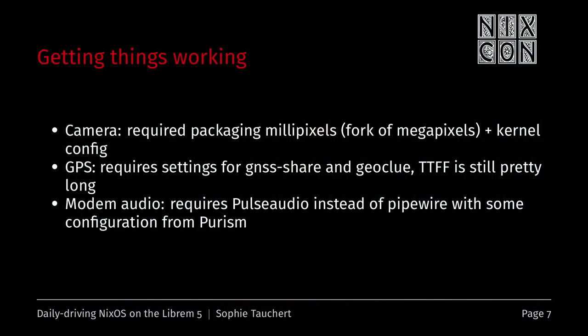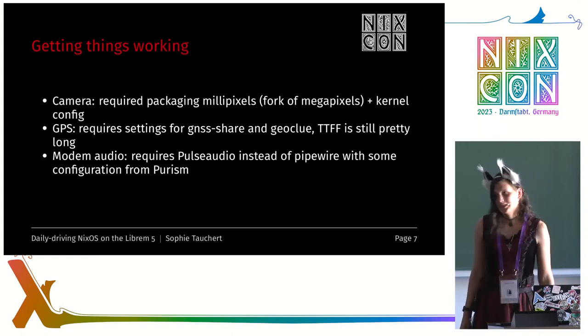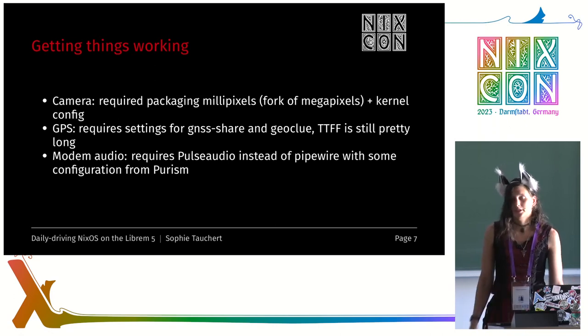So, getting things working. The camera required packaging a fork of Megapixels, which is an existing Linux mobile app for camera support. Purism has forked it to Millipixels and added support for the Librem 5 hardware. It also required configuration because the kernel Purism builds already contains the necessary configuration, but NixOS actually overrides this configuration in its build process, so I have to manually set it again for the buildLinux call in nixpkgs. But camera works now — that's also part of the already merged pull request.